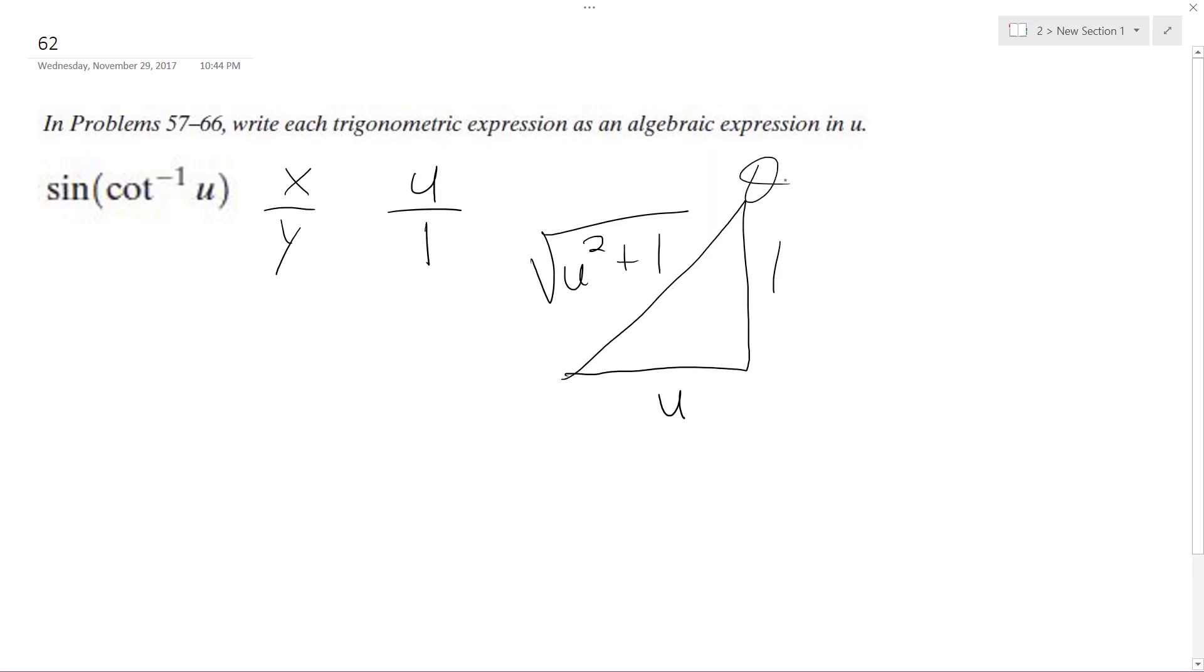So my radial value, which I get from taking the inverse cotangent, and I take the sine of that, so the sine is going to be opposite over hypotenuse. So it's going to be 1 over the hypotenuse, which is the square root of u squared plus 1. So in the end, the final solution is going to be 1 over the square root of u squared plus 1.